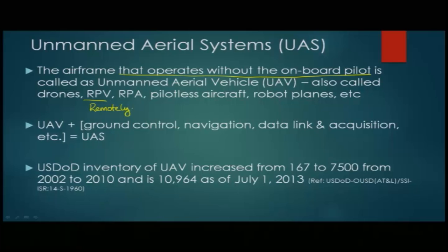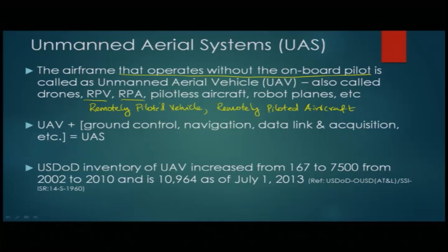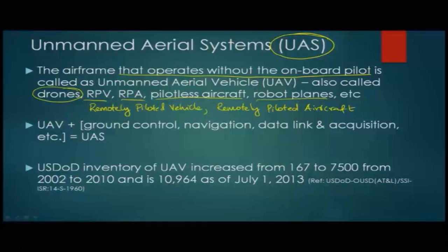The UAV is controlled from a remote location, which is why it is also called RPV — remotely piloted vehicle — or RPA — remotely piloted aircraft. Some people call it a pilotless aircraft, robot planes, or most commonly, drones. From a systems engineering standpoint, our term is UAS — unmanned aerial system — focusing on the system as a whole, not just whether it is a drone or RPV. The total UAS for a systems engineer includes the UAV, the ground control, navigation, data link, acquisition, and payload.